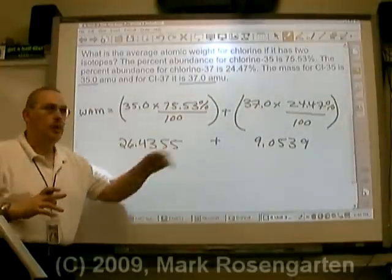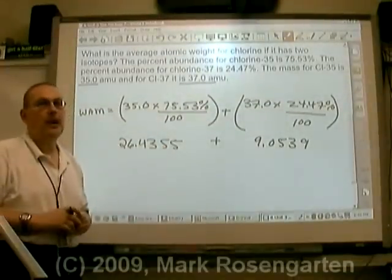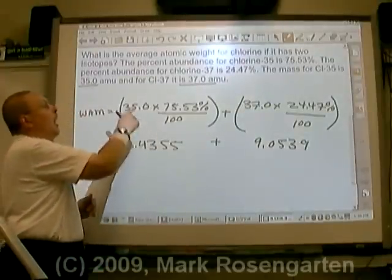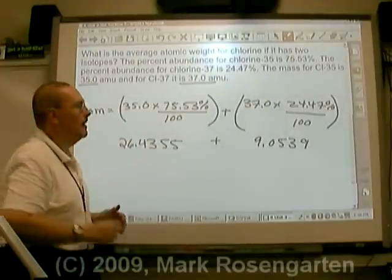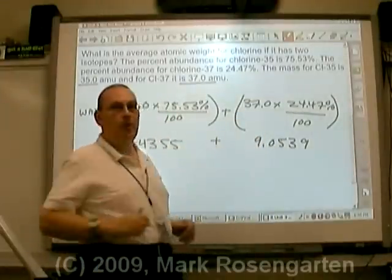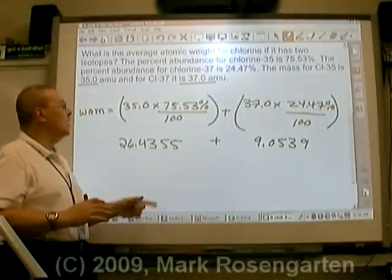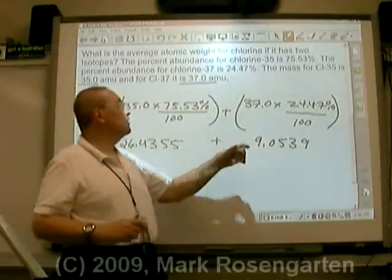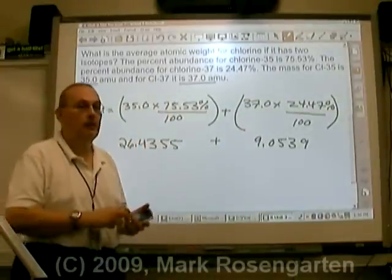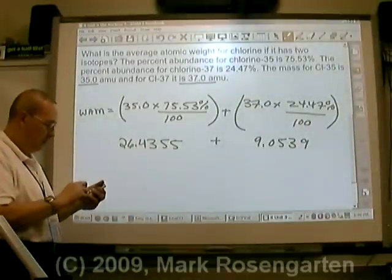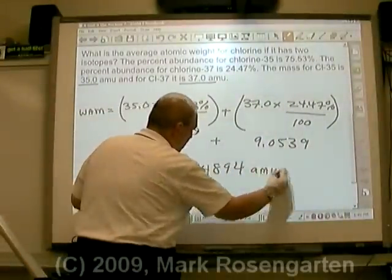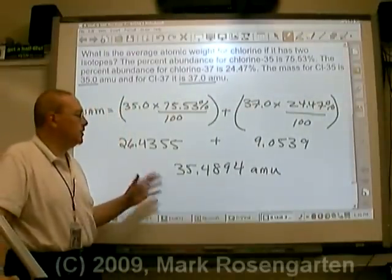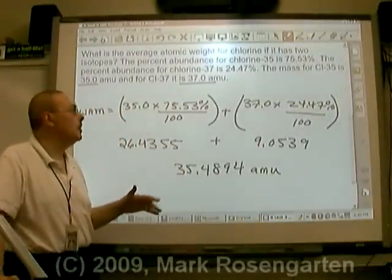When you combine these two numbers together, that will give you the weighted average. Of whatever the weighted average is, this part is made up of isotope 35 and this part is made up of isotope 37. You can see that of our final average, 35 is going to make up a much greater part than 37 will. So let's add these two numbers together. The final weighted average of our isotope is 35.4894 AMU.